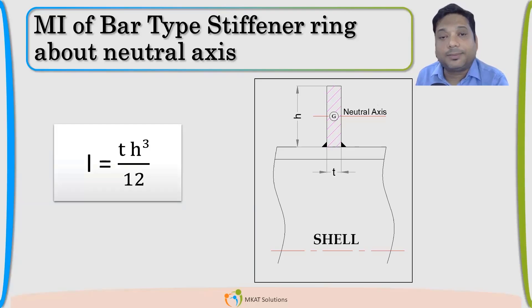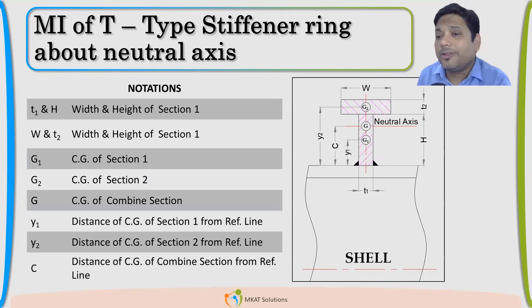If the same stiffener, if I put it in a different orientation, I will not get the same Moment of Inertia. And that is the reason stiffeners are put like this, not width touching to the shell. We prefer having this ring welded like this. The thickness will be welded to the shell so that I can get higher Moment of Inertia. Always remember that.